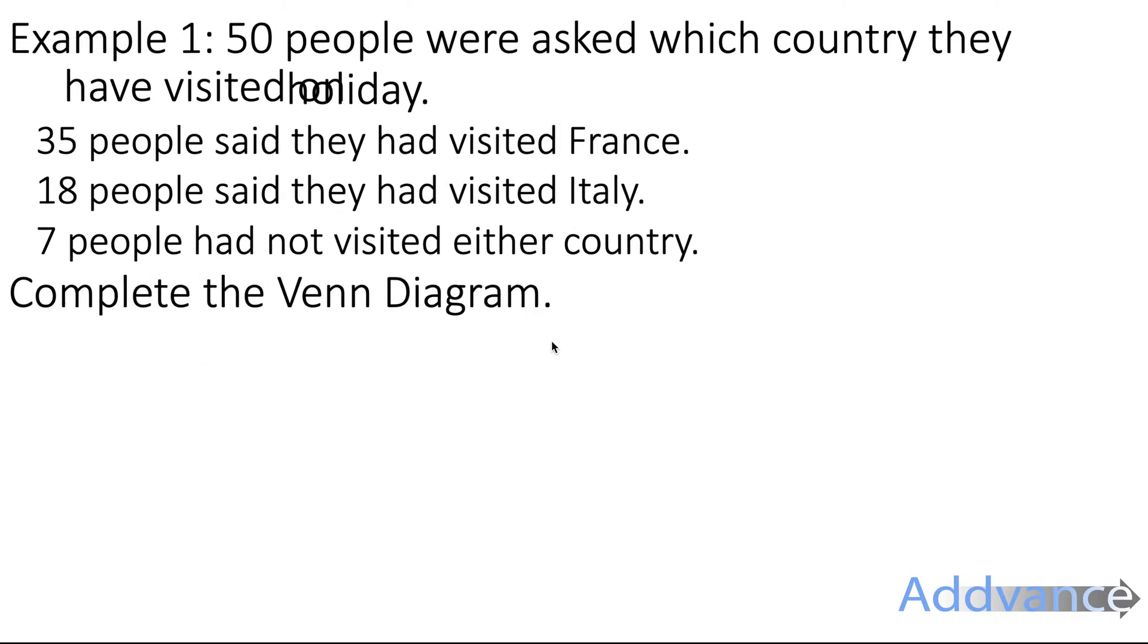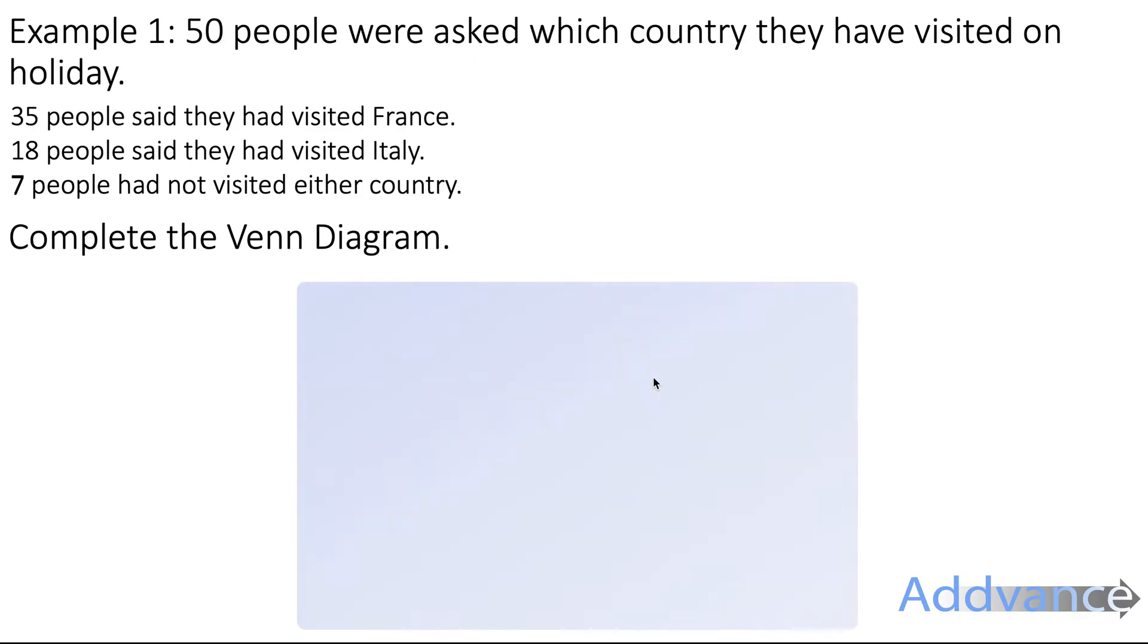The question asks us to complete the Venn diagram. So it draws a Venn diagram like this. We've got the universal space and we've got two circles representing France and Italy. We know that seven people had not visited either country so straight away we can put seven on the outside as representing that seven people had not visited either country.